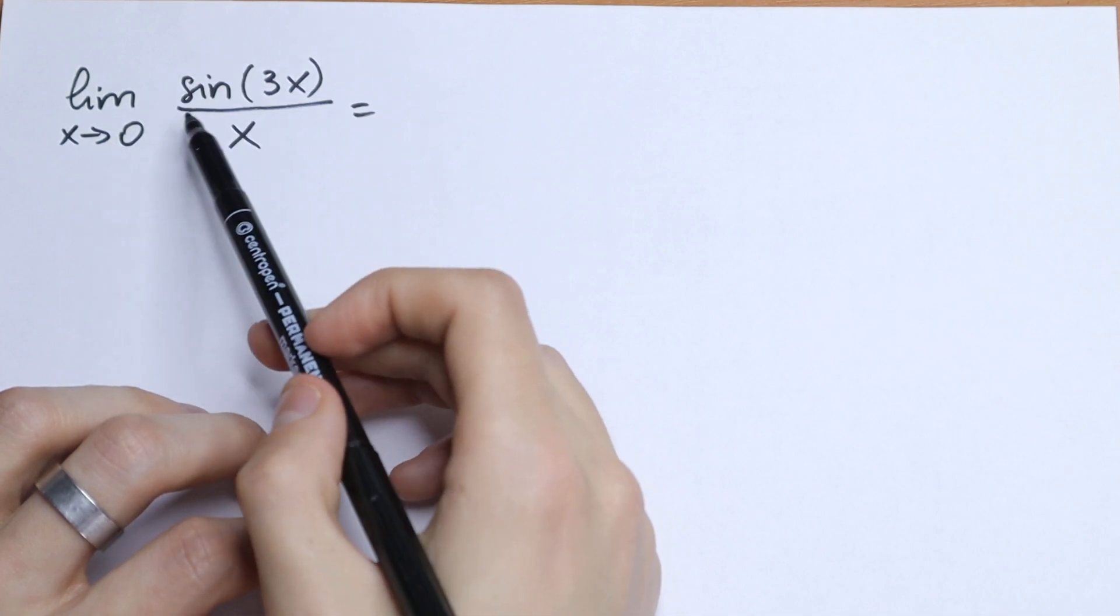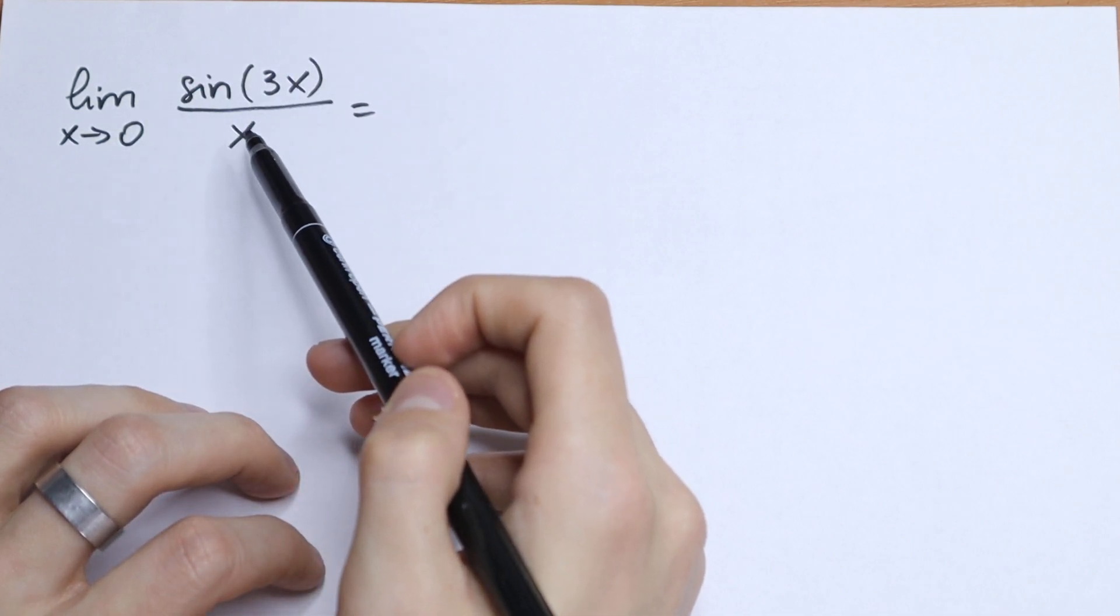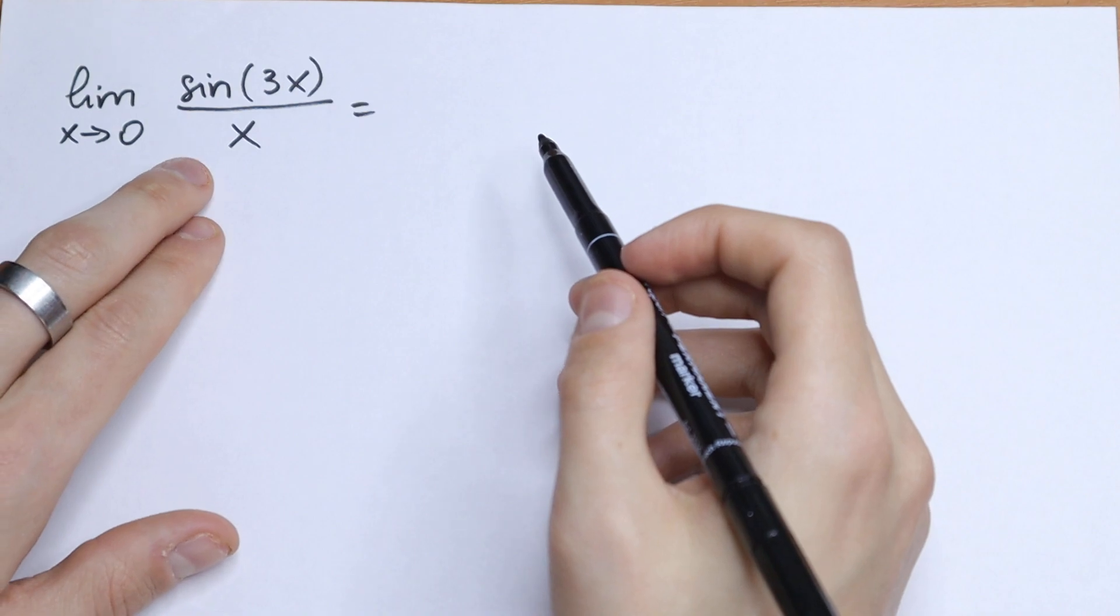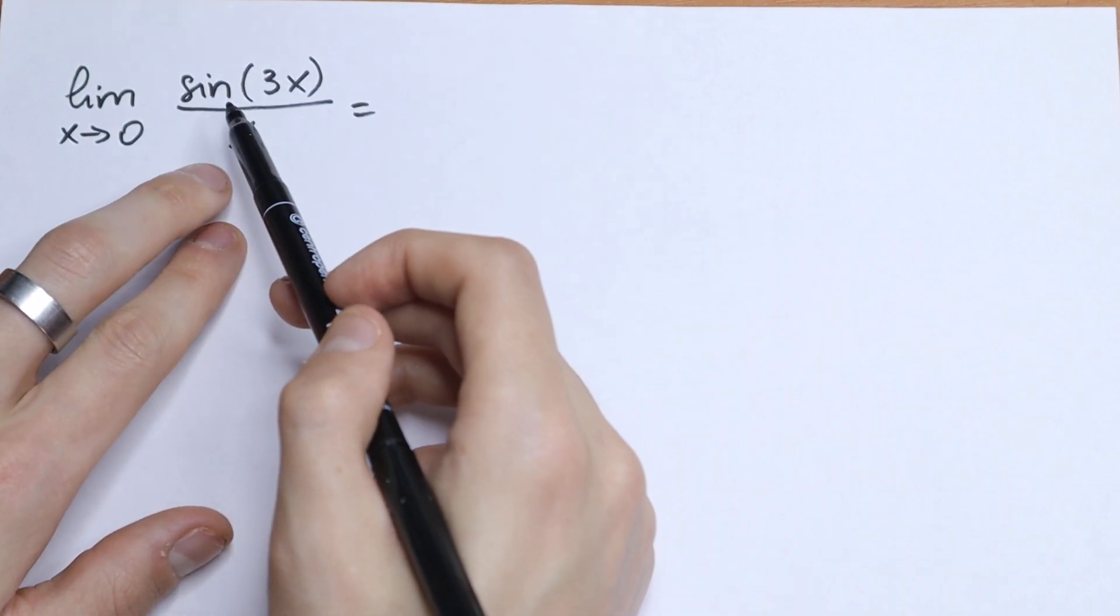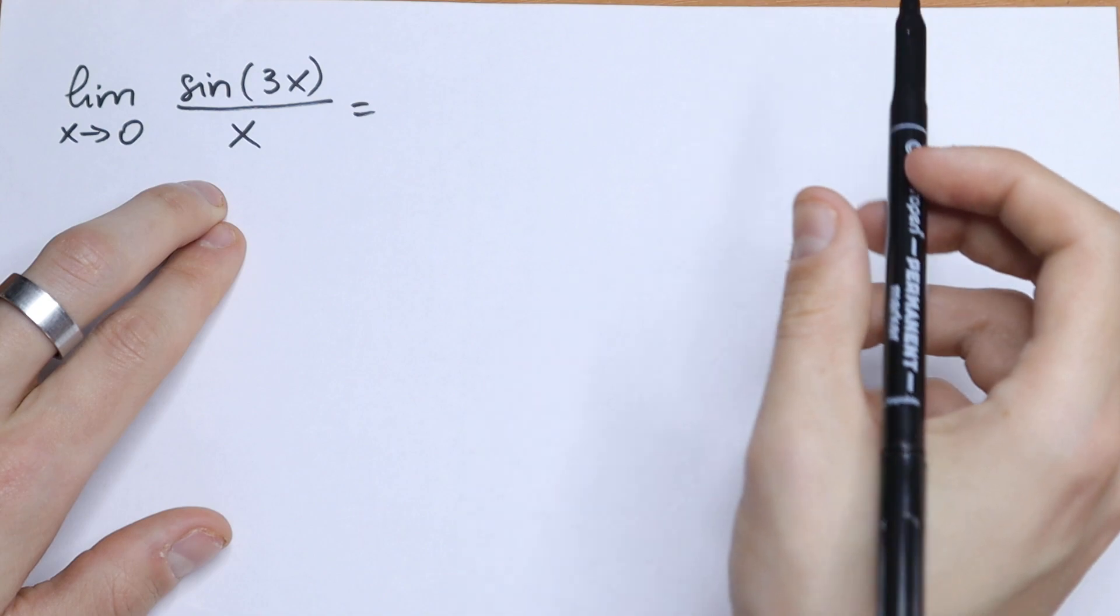What is the limit as x approaches 0 of the function sine 3x all over x? We all know that right here we will have an undefined answer. We will have 0 over 0.